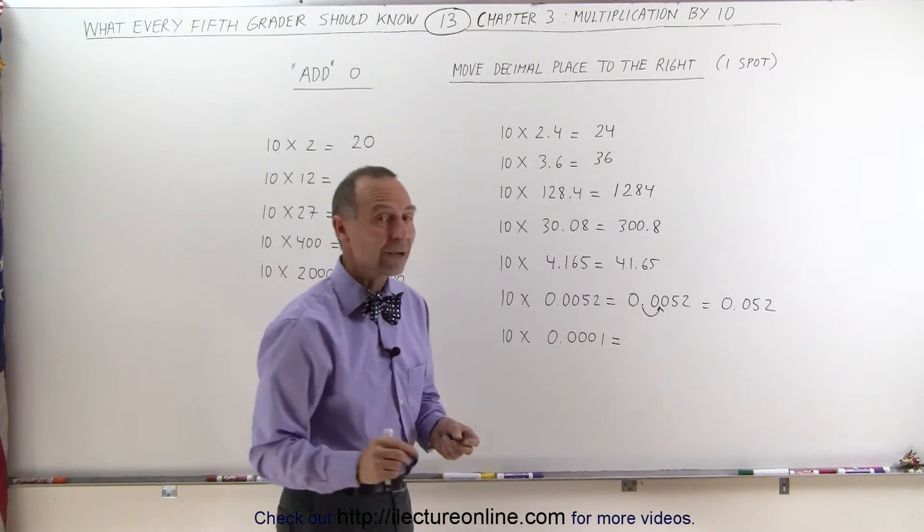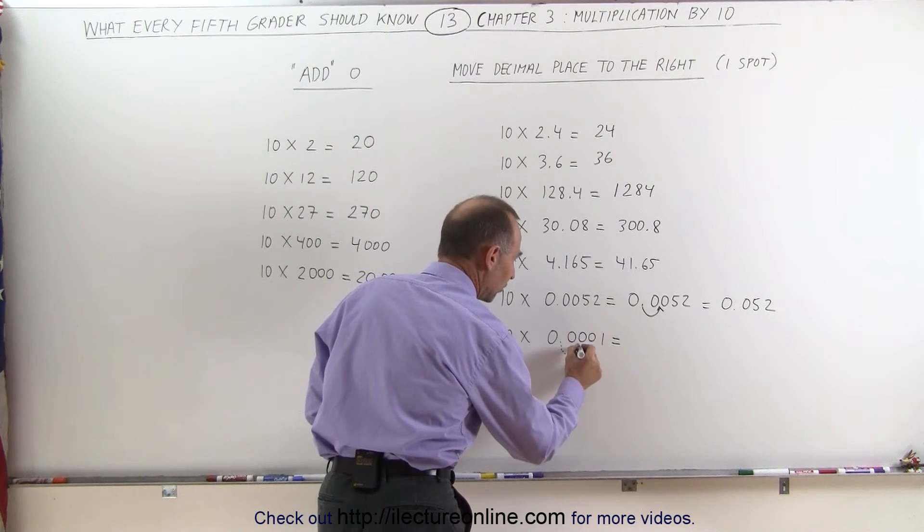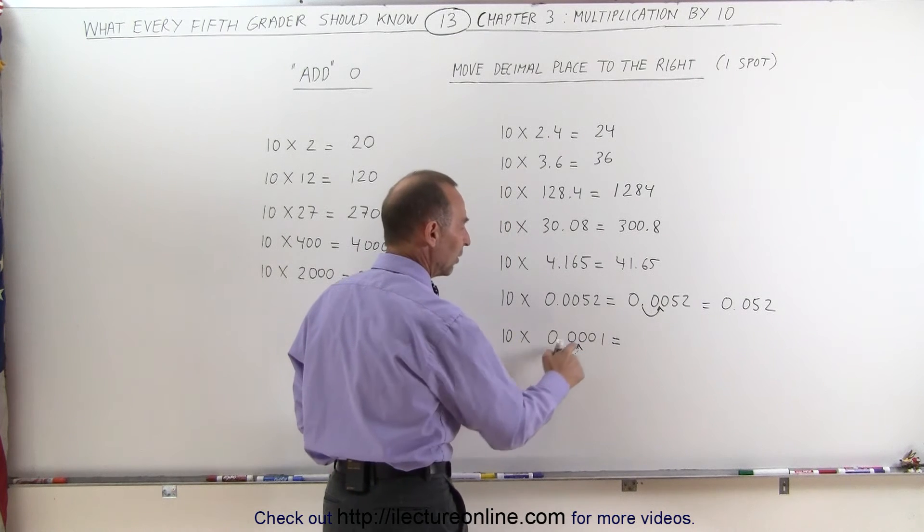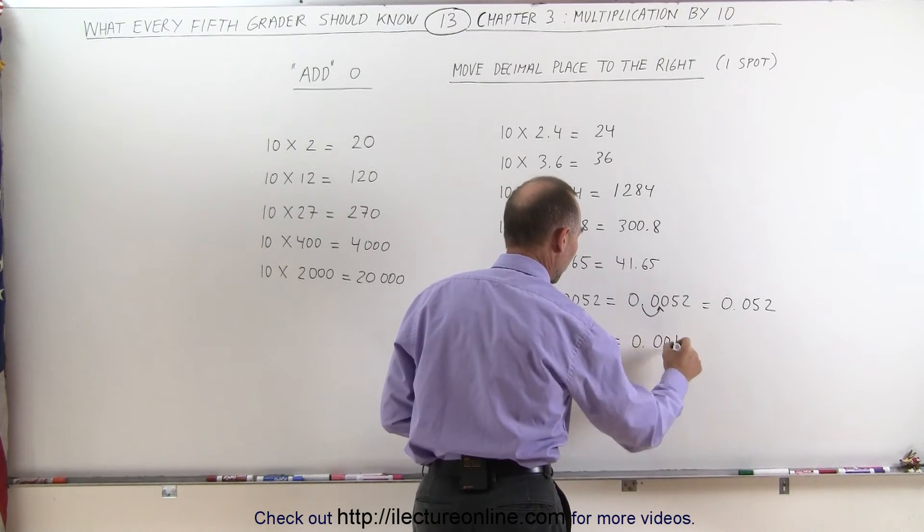Same with this number right here. Since there's so many zeros there, you can see that by physically moving the decimal place over here when you multiply times 10, so the decimal place ends up over there, you can then say it's 0.001.